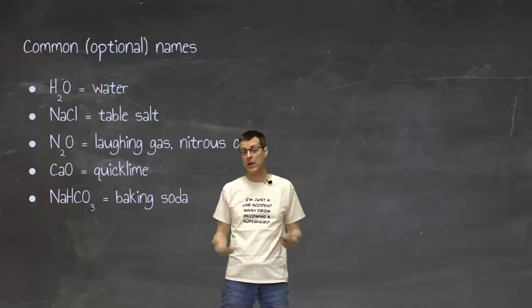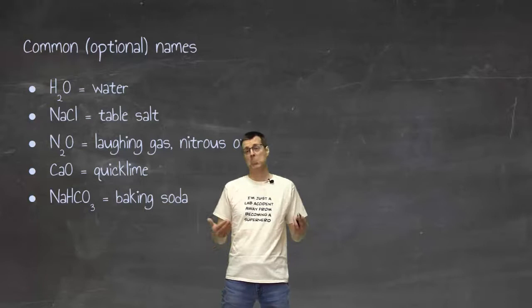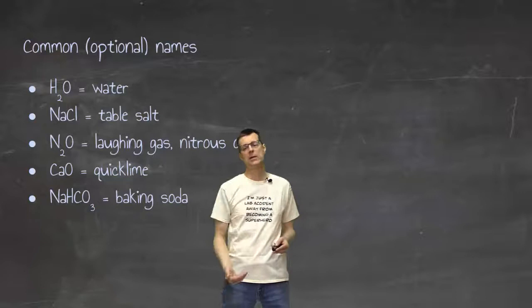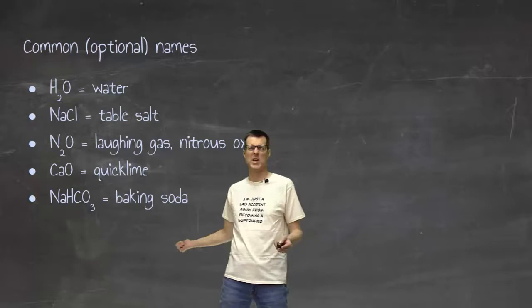If you want to call laughing gas dinitrogen monoxide, perfectly acceptable. If you want to call it nitrous oxide, also acceptable. If you want to remember that quicklime is calcium oxide, CAO, okay, but not necessary. And the last one is actually one step ahead of us, two steps ahead of us, if we think about the nomenclature schedule that we're going to keep, because it involves more than two kinds of atoms. So by the time we get to that, you'll probably have forgotten.